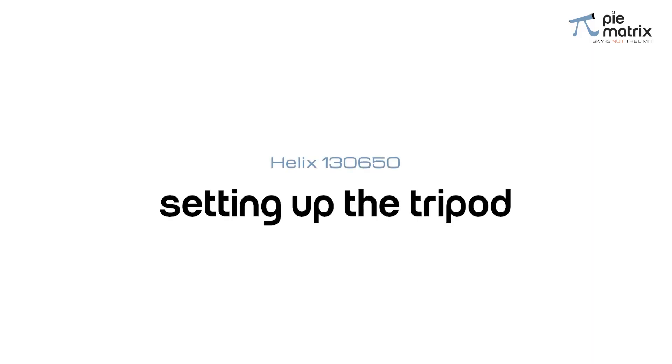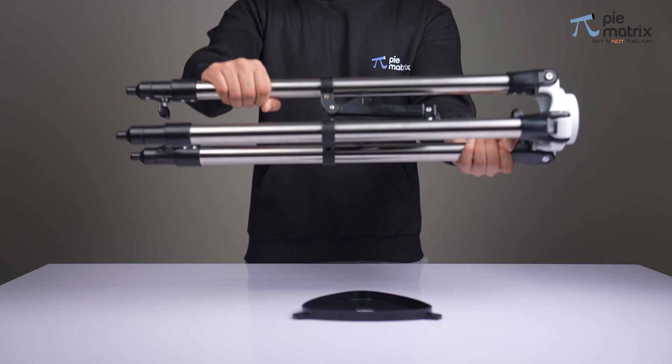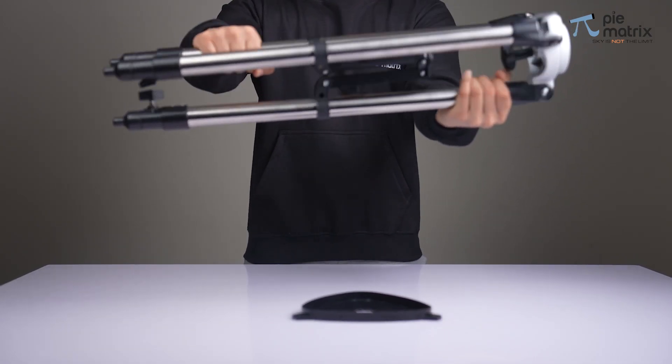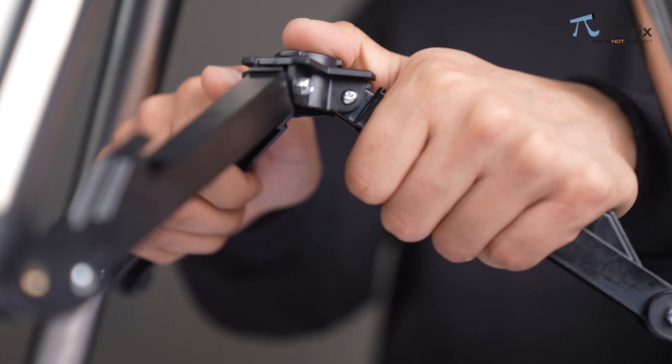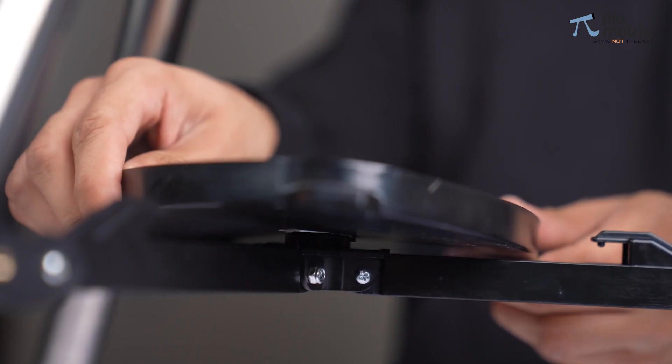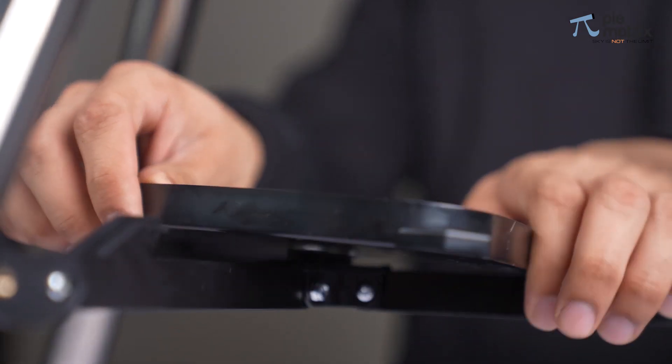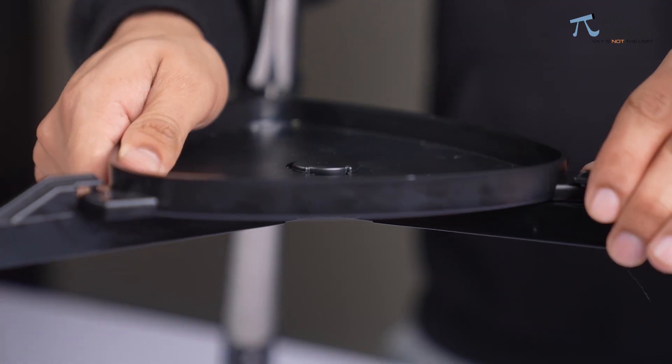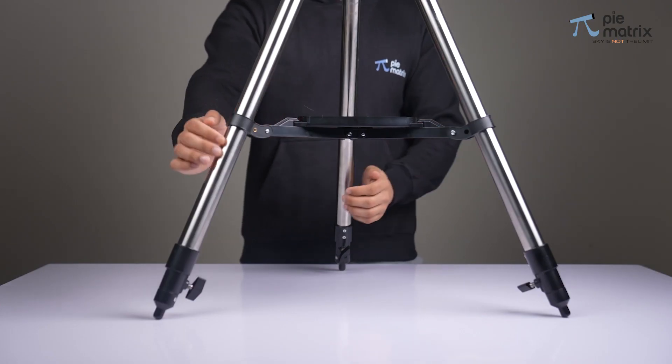Let's begin with the installation process. First, we take the tripod and mount the accessory tray between it by rotating it clockwise. This will ensure that the tripod stays in its place all the time.